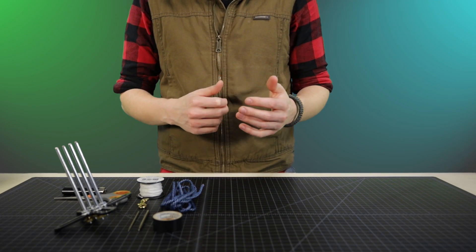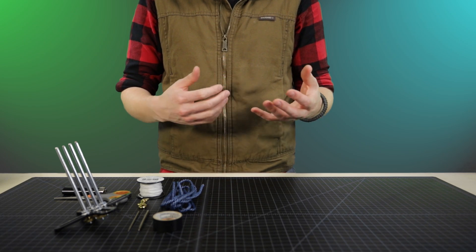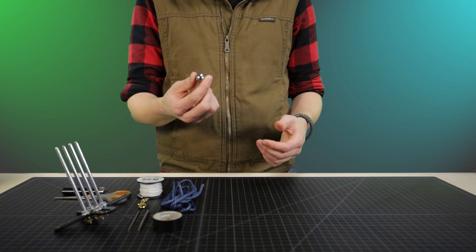Hey guys, today I'm going to be showing you how to make a small monkey fist keychain. If you're new to making monkey fists, a monkey fist knot is tied around a spherical object.